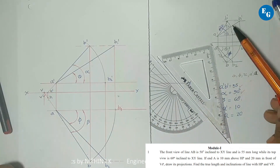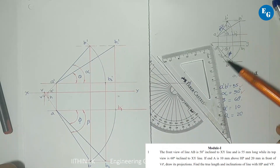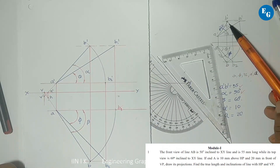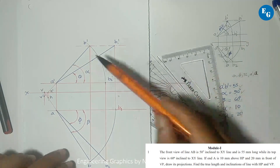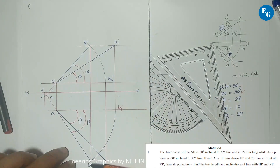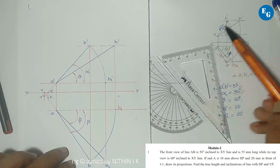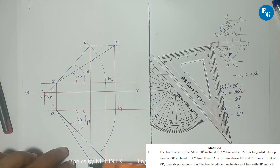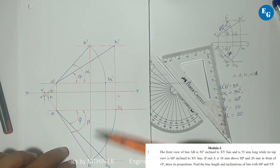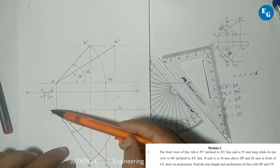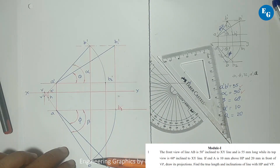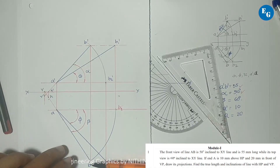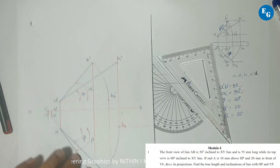Draw the projector line from B dash down. The front view and top view share the same projector line. The B dash projector line gives us point B. The projection is now complete — front view and top view are done.